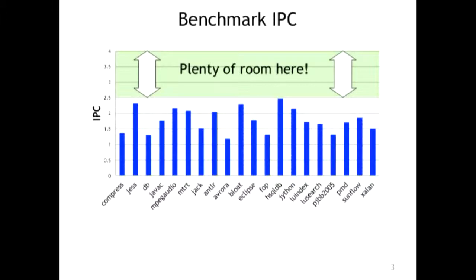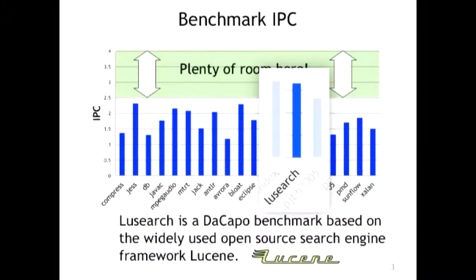If you want to optimize your system, you might ask: why is my IPC so low? Looking at a benchmark called Lucene Search — which uses Lucene, a popular open-source search framework — it has a pretty low IPC. If you ask the developer to speed up the program by 50% next month, they'll grab a profiler to see why IPC is low.